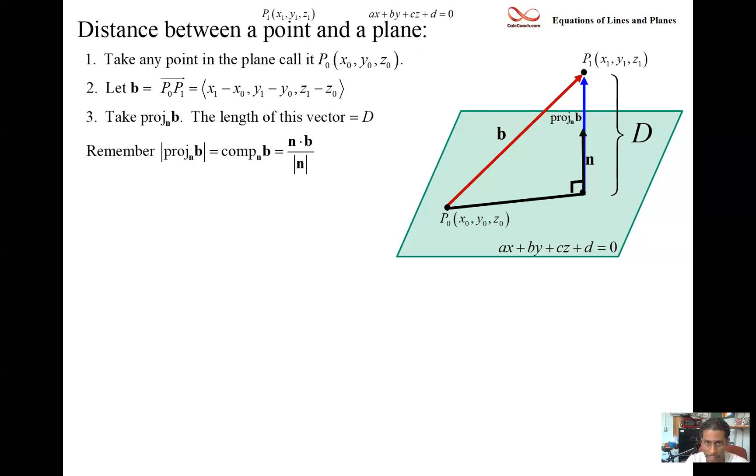We have the vector n, which is ⟨a, b, c⟩. We have the vector b, whose components are right there. And we're going to take the dot product.